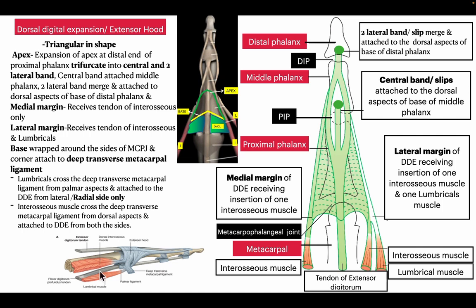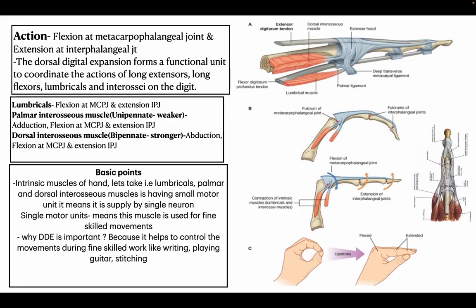Keep in mind that the lumbrical muscles insert from the lateral margin only. As shown in the diagram, the lumbrical muscles cross the deep transverse metacarpal ligament from the palmar aspect and attach to the dorsal digital expansion from the radial side. The interossei muscles — both palmar and dorsal — cross the deep transverse metacarpal ligament from the dorsal aspect and attach to the dorsal digital expansion from either side.